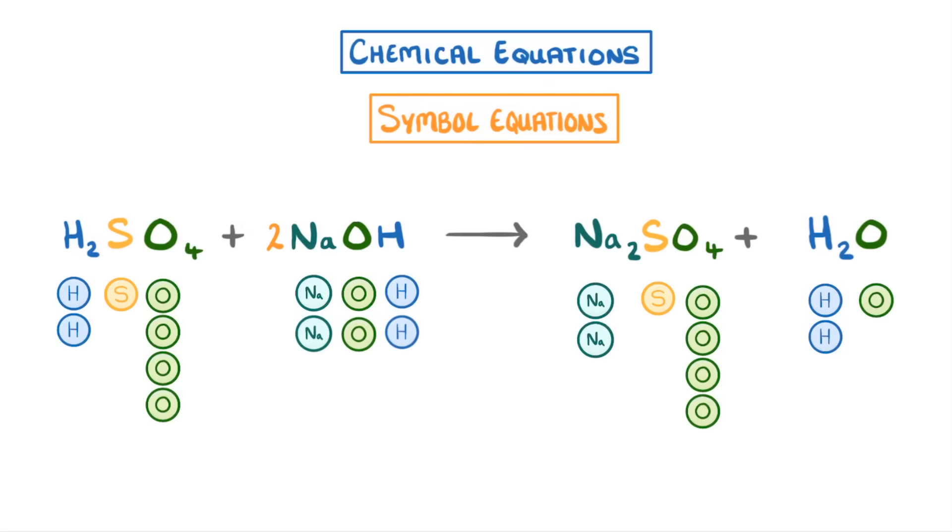Then if we count all of our atoms again, we can see that we need 2 more hydrogens and 1 more oxygen on the right hand side. This is a pretty common problem to have, and we can fix it by adding 1 more water molecule to the right. As always, when you think you're done, just double check to see if it's balanced. So we've got 4 hydrogens, 1 sulfur, 6 oxygens and 2 sodium atoms on each side. So this is exactly balanced, and we're finished.